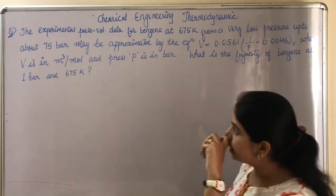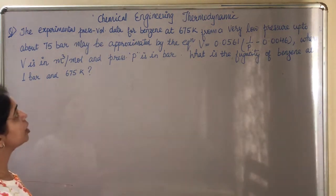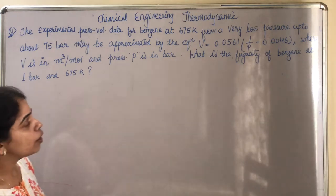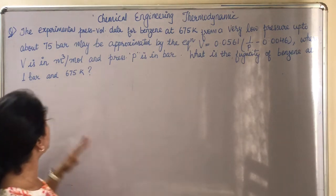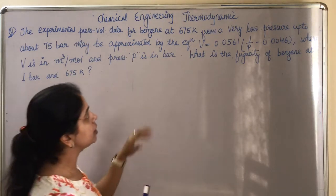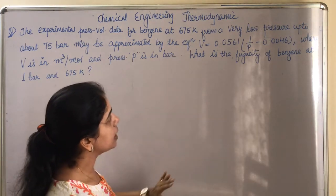The problem is: the experimental pressure-volume data for benzene at 675 Kelvin from very low pressure up to about 75 bar may be approximated by the given equation.